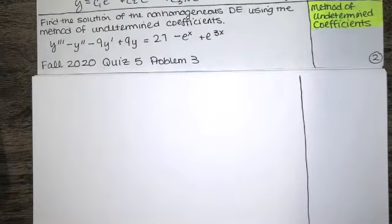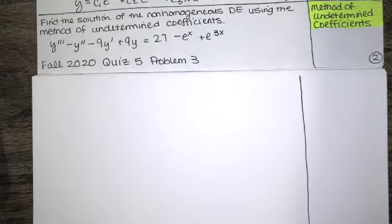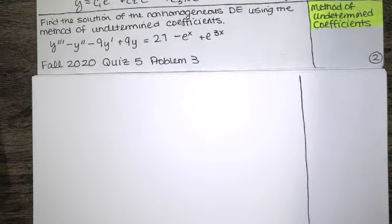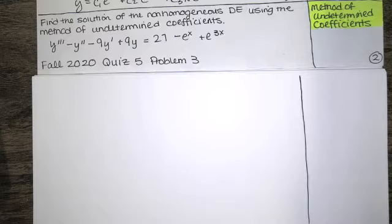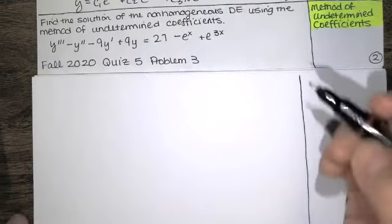In this video we solve the third problem from quiz number five from the fall 2020 semester. We're asked to find the general solution of the non-homogeneous differential equation using the method of undetermined coefficients. Whenever we're solving a non-homogeneous equation, we need to solve the homogeneous equation first, then solve for y sub p, and put those two pieces together to get the general solution.